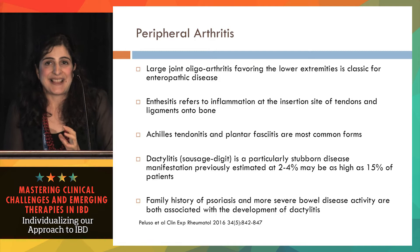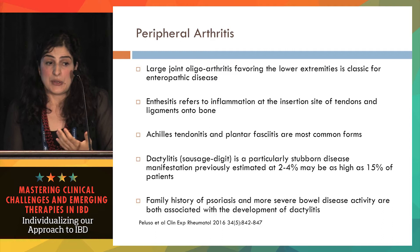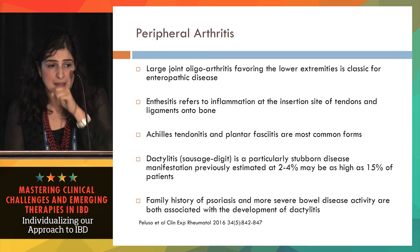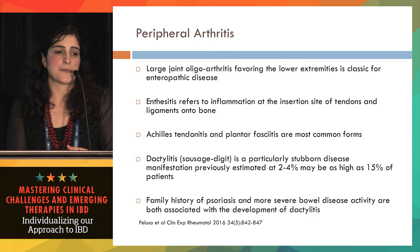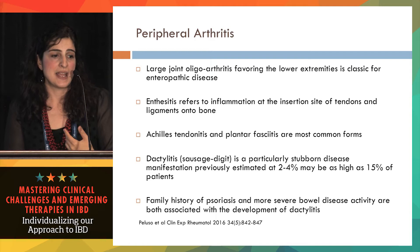Moving on to peripheral arthritis: the most classic manifestation is a large joint oligoarthritis — a swollen knee or a swollen ankle — which particularly seems to affect the lower extremities. We also see enthesitis, which refers to inflammation at the insertion sites of tendons and ligaments onto bone, such as Achilles swelling or plantar fasciitis. Much less common is dactylitis — a sausage digit. We used to think it was less common in IBD compared to other spondyloarthropathies like psoriasis, but studies are suggesting it may be more underappreciated, possibly as high as 15% of patients, particularly if they have a family history of psoriasis or more severe bowel disease.